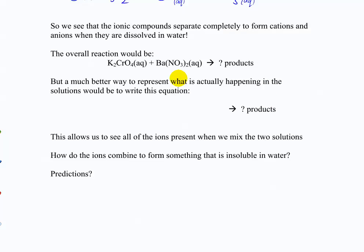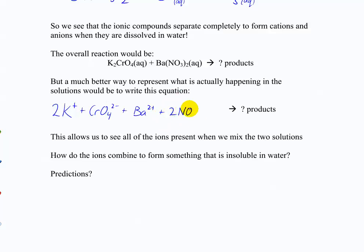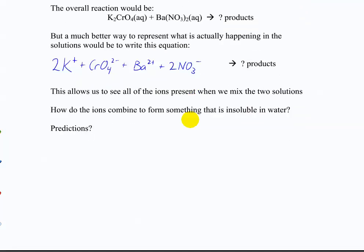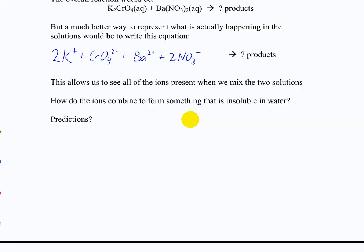The molecular equation is one way to write the reaction, but a more appropriate depiction of what's going on in solution is the complete ionic equation. For example: 2K⁺ + CrO₄²⁻ + Ba²⁺ plus the nitrate ions — all these ions are forming the products. We can then make predictions about what happens when they combine. The insoluble product is barium chromate, but we haven't yet explained why.